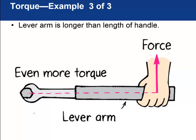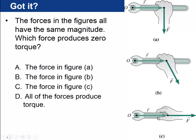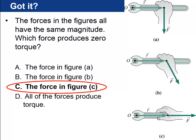Here are three figures — all show a hand applying the same force to a wrench. Which one gives zero torque? The answer is C: the force is in the same direction as R, so theta equals zero, and sine-theta equals zero as well, giving zero torque. Another way to see it: the lever arm is zero in this case.